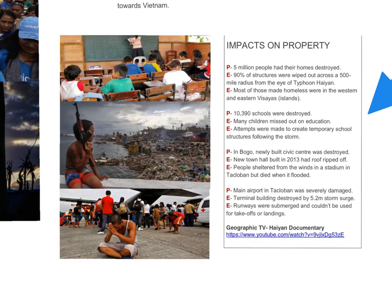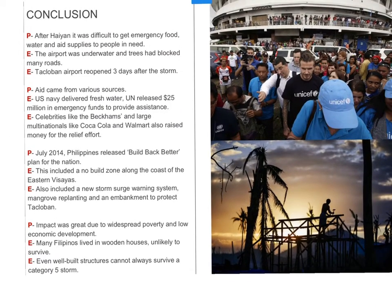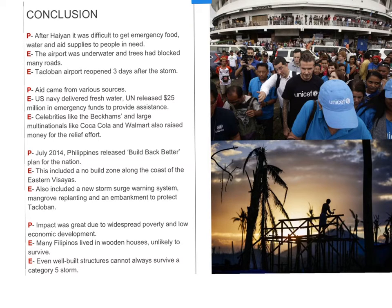The next section covers conclusions and responses in the aftermath of Haiyan, which will probably be used as a conclusion in essay questions. It was obviously hard to get emergency food, water and aid to people because of the isolated nature of the islands. This wasn't helped by the airport being underwater and trees blocking roads, although the airport did reopen relatively quickly — three days after the storm. Aid came from various sources: the US Navy delivered fresh water, and the UN released $25 million in emergency funds. Notably, the response was endorsed by national brands including Coca-Cola, and the Beckhams also visited.